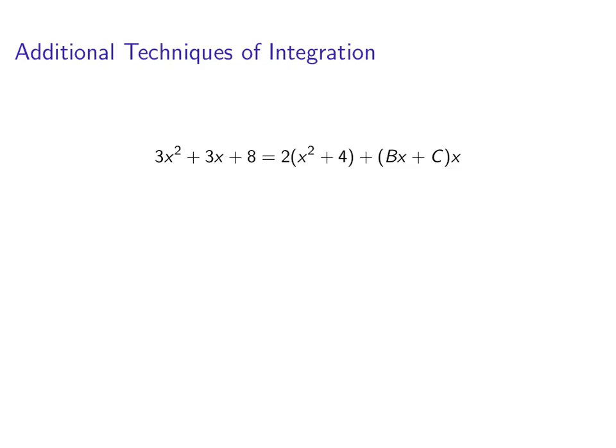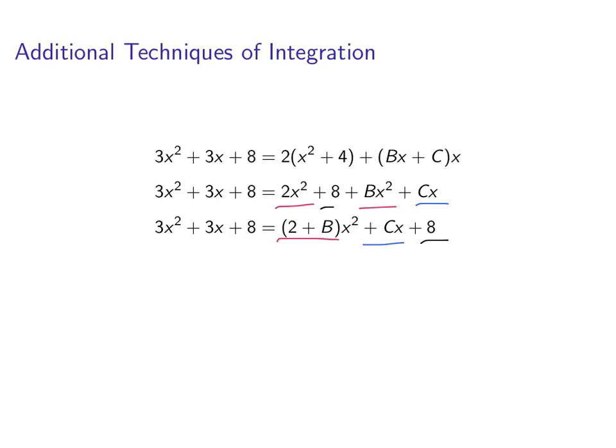Well, no fractions anymore. So, we get 3x^2 + 3x + 8 is equal to 2 times (x^2 + 4) plus (Bx + C) times x. Multiplying everything out, on the right hand side we'll have 2x^2 + 8 + Bx^2 + Cx. We'll gather by terms. So, (2 + B) times x^2, right? Because there's a 2x^2 and a Bx^2. We also have a Cx and we have an 8.